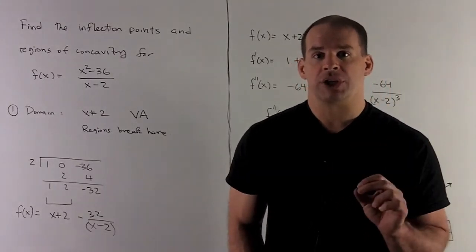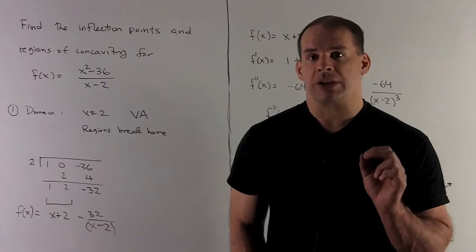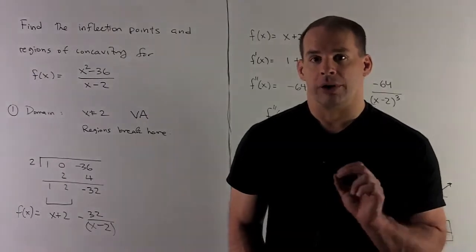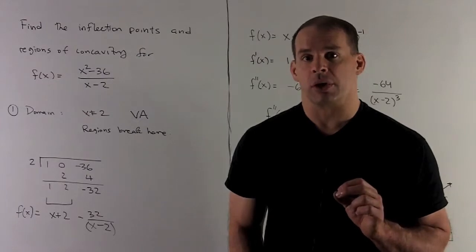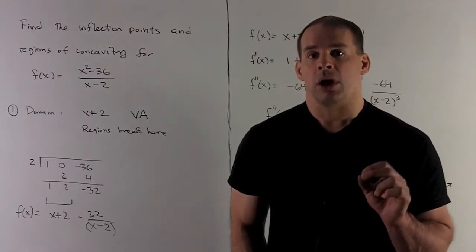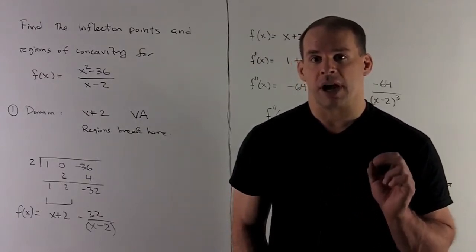Now, I have a rational function. Our rule for the domain of a rational function is all real numbers except where the denominator equals zero. So here, our domain is all real numbers except for x = 2.